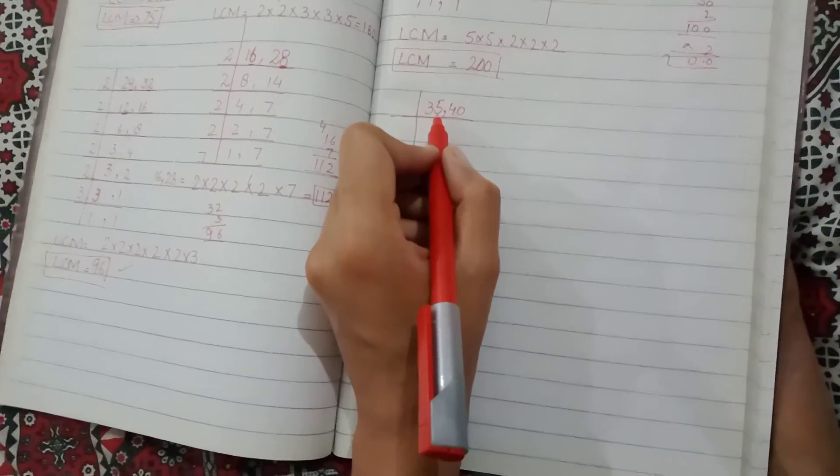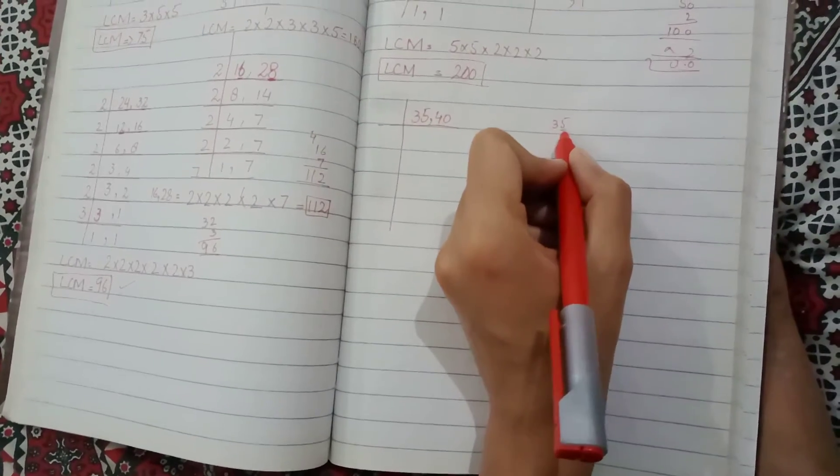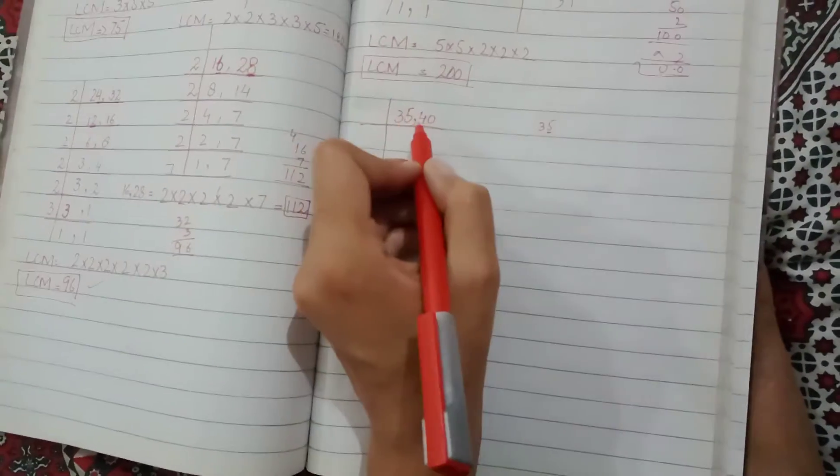First of all, you have to check that 35 will be divisible by 2 or not. Students, 35 is not divisible by 2 because it ends in 5. Only even numbers are divisible by 2.